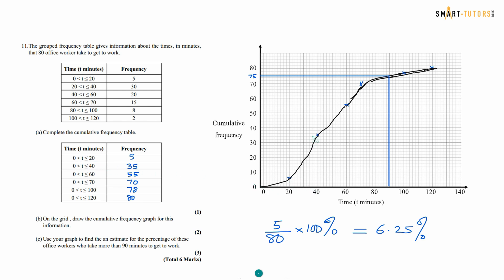5 put across 40, 35, 40, 35 put across 60, 55, 60, 55, 70, 70 and 100, 78 and finally 120, 80. You draw a smooth curve. My graph is not that smooth enough. So you need to do a nice one.